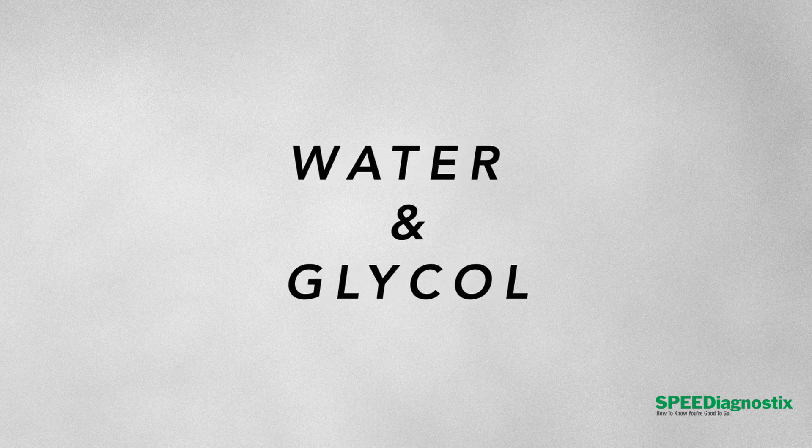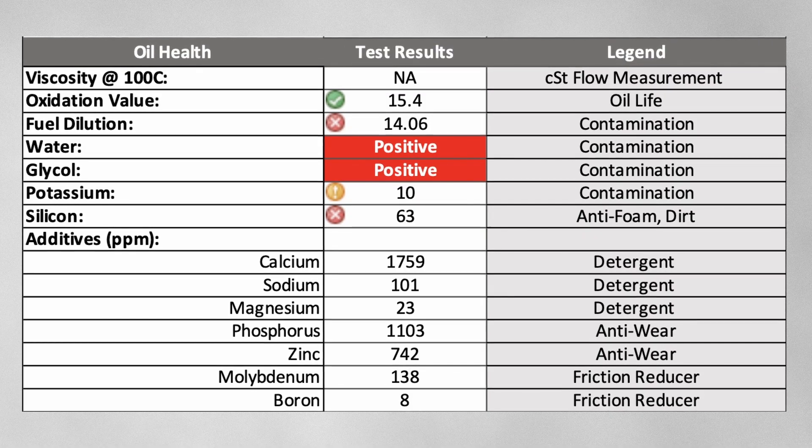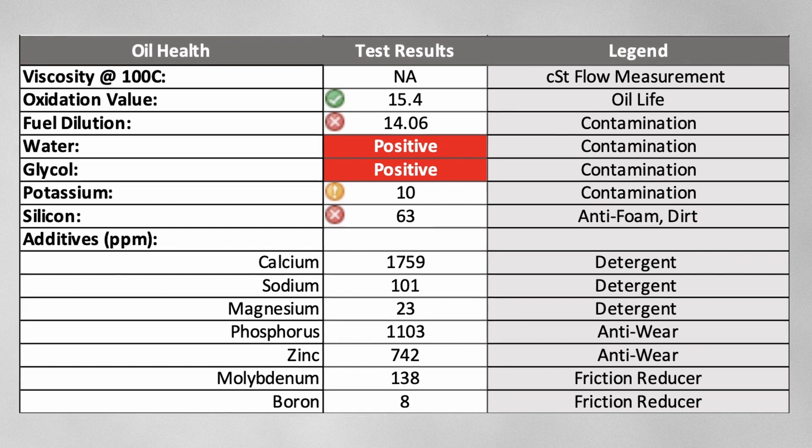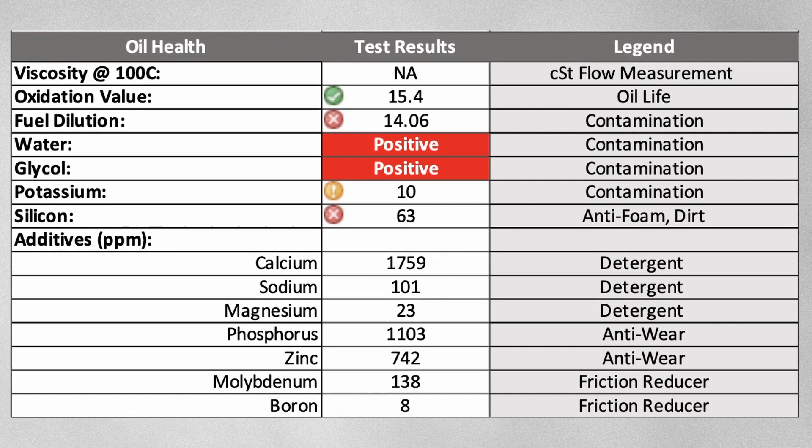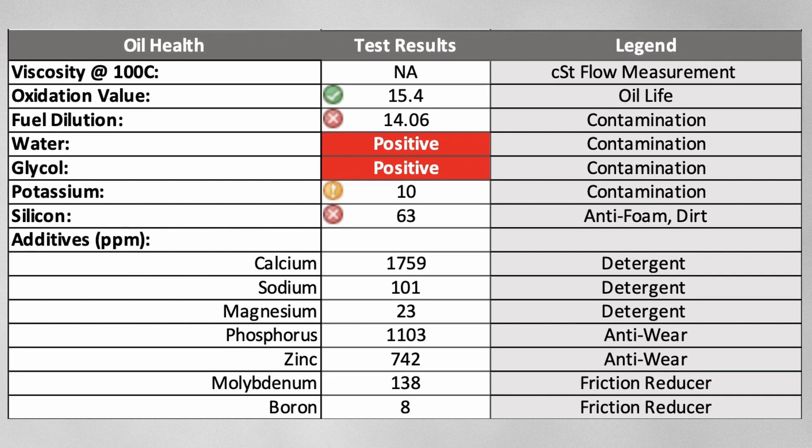The next contaminant to look for is water and glycol — both are elements of coolant. So if you've got a head gasket leak or something like that, this is where it's going to show up. Potassium can also show up as an element — essentially an additive in those coolants. You want to look at that and make sure there's no contamination going on.